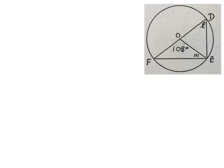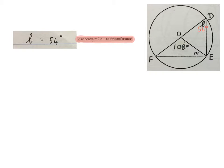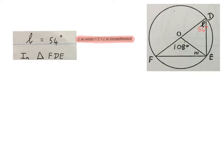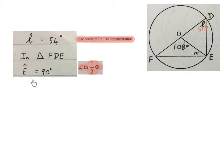The radii make this angle equal to that angle, and those radii make this angle equal to that angle. L is 54 degrees — the angle at the center is two times the angle at the circumference. That angle at the center is twice the angle at the circumference, so L is half of 108.